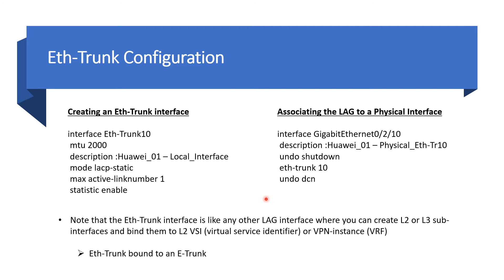The Ethernet trunk interface, like any other LAG interface, supports sub-interfaces. Sub-interfaces can be Layer 2 or Layer 3. If you're running MPLS and want to bind a trunk sub-interface to a virtual service identifier — for example for VPLS or Layer 2 customer connectivity — you can do that on an Ethernet trunk sub-interface. You can also create a Layer 3 sub-interface and bind it to a VRF, which is called a VPN instance in Huawei.